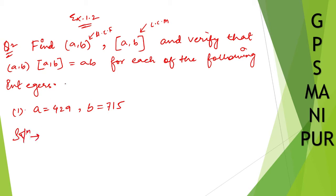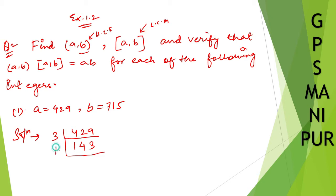So, solution. First we need to find HCF and LCM. Let me use the prime factorization method, because the next question is also asking that. So 429 — I can divide by 3: 3 into 143. I cannot divide 143 by 3 or 7, but I can divide by 11: 11 into 13. So 429 can be written as 3 into 11 into 13.